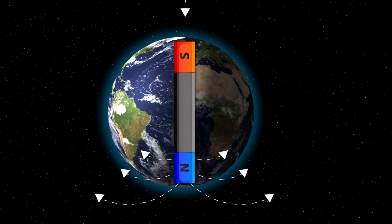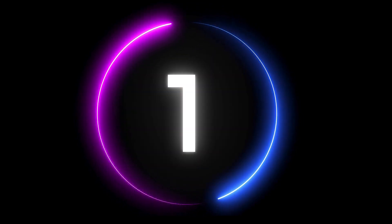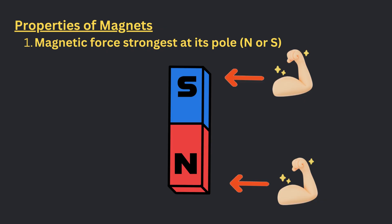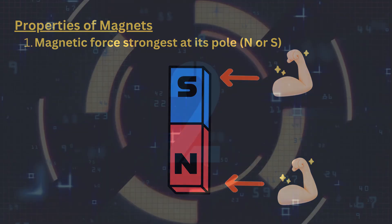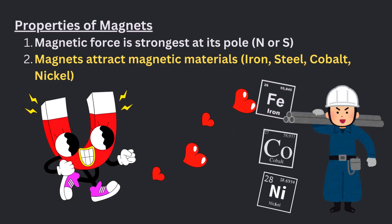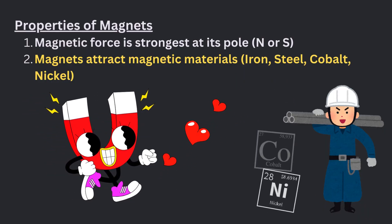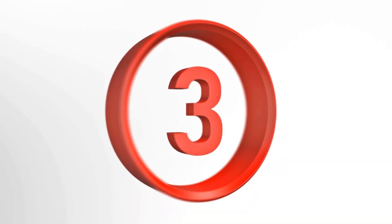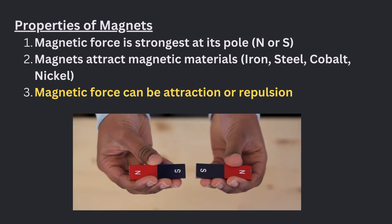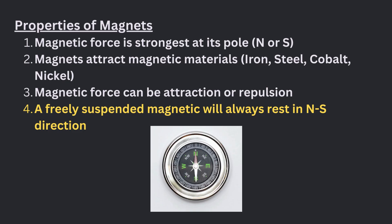Key characteristics of magnets: One — a magnet is strongest at its poles, either north or south. Two — magnets attract magnetic materials: iron, steel, cobalt and nickel. Remember, I sing cool notes. Three — magnetic force can be attraction or repulsion. Four — a freely suspended magnet will always rest in a north-south direction. Opposites attract and likes repel.